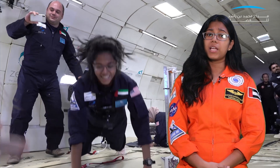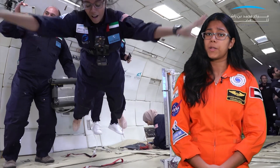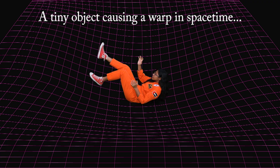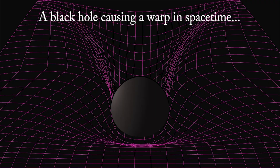But remember that one force unexplained by the standard model? This is where Einstein's theory comes in. General relativity explains that gravity is caused due to a distortion of space-time by massive objects. The larger the warp caused by this object, the greater the gravitational force exerted by it on other objects.